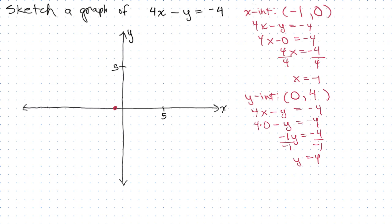And the y-intercept is on the y-axis, and that's at (0, 4). And so we connect those two and we'll have it. That's a graph of 4x - y = -4.